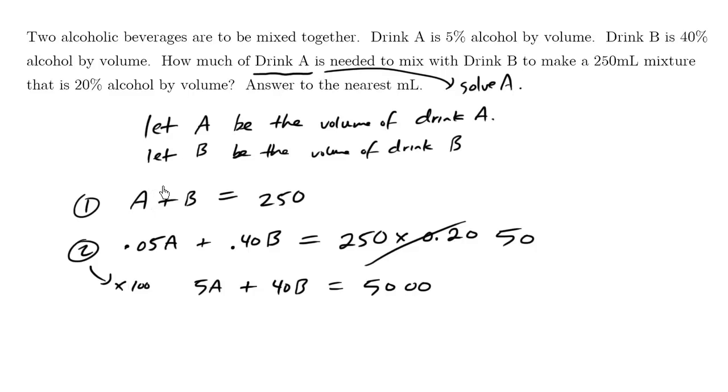So I'm going to multiply equation number 1 by 40. So what I'm going to do is I'm going to take this equation, I'm going to go times 40, and I'm going to bring the result down here. So we'll say that 40A plus 40B equals 40 times 250. 40 times 250 is 10,000.